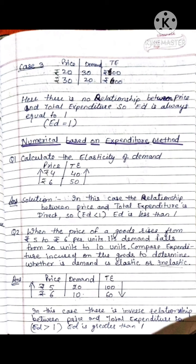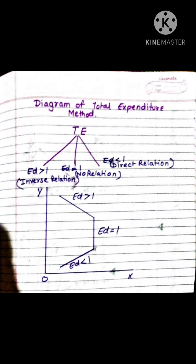Now we will see the diagram of the total expenditure method. The diagram is divided into three parts. When ED is greater than 1, there is an inverse relationship between price and expenditure, so the curve slopes downward. When ED equals 1, there is no relationship and the curve is straight. When ED is less than 1, there is a direct relationship and the slope again comes downward. This completes our lecture — thank you, have a nice day.